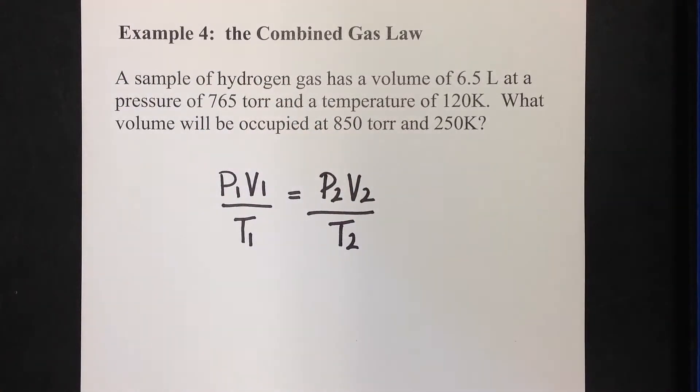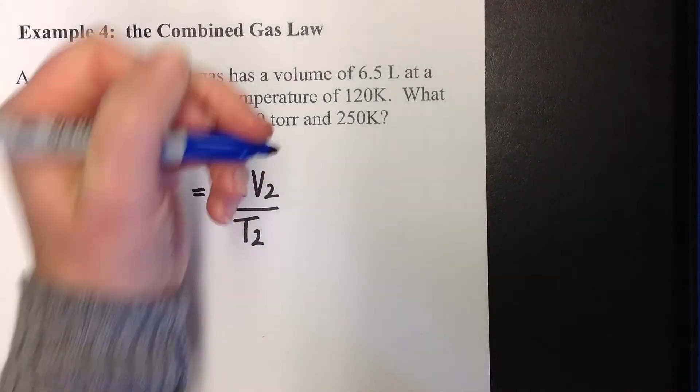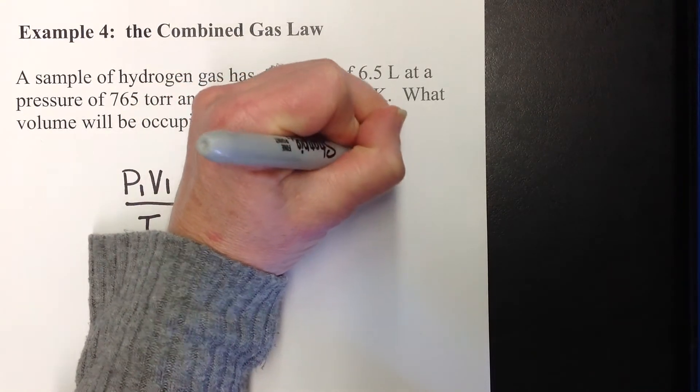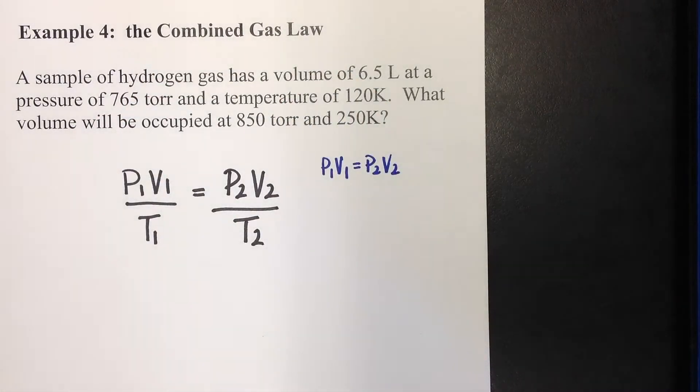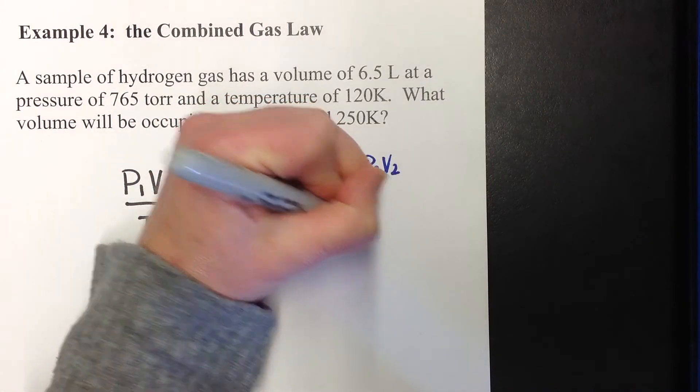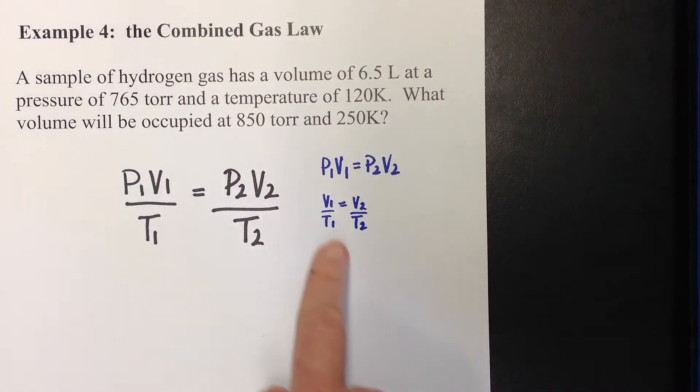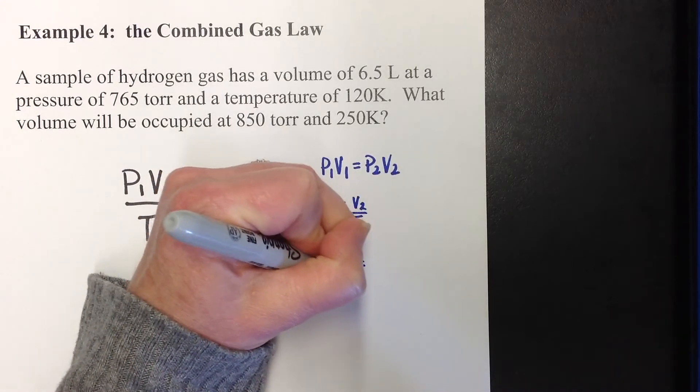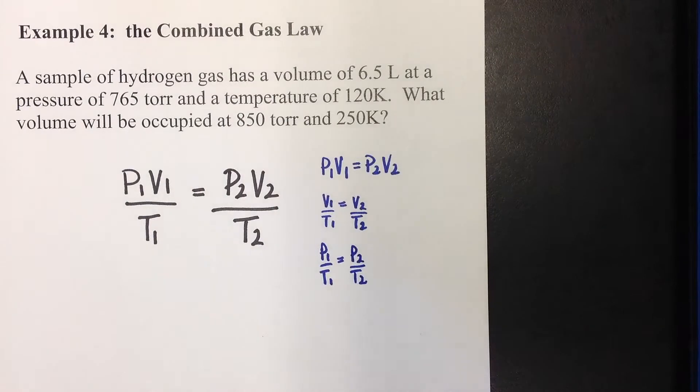I want to remind you where this comes from. Boyle's law was P1V1 equals P2V2. All we were dealing with in that one were P's and V's, and they were always on top. Charles' law was V1 over T1 equals V2 over T2. These are always on top, but when we bring temperature in, it's always on the bottom. Again, all the ones are on the left, the twos are on the right. Gay-Lussac's law was P1 over T1 equals P2 over T2. Again, if a pressure or a volume is involved, it's always on the top, temperature's always on the bottom, ones on the left, twos on the right.